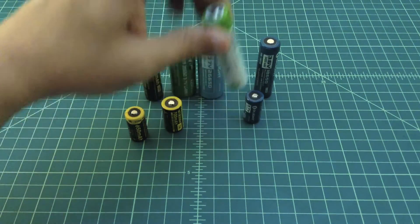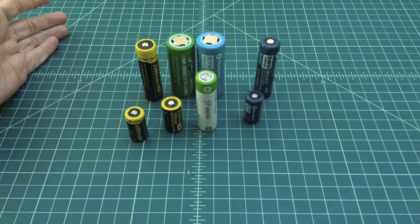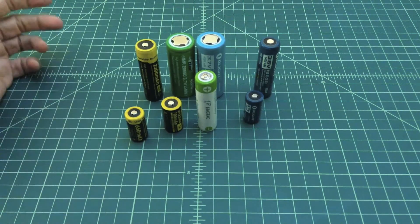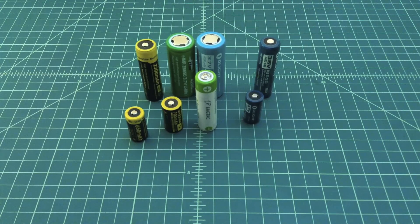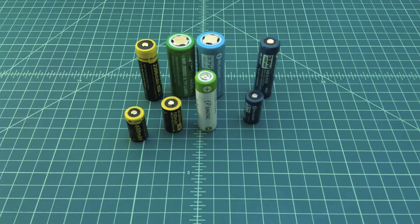If you have a flashlight that says I can run off of an 18650 or I can run off of two 16340s, you want to take a look at how many volts.